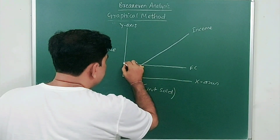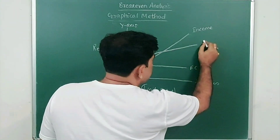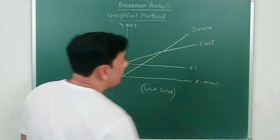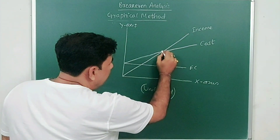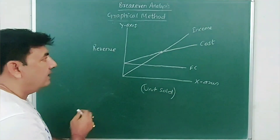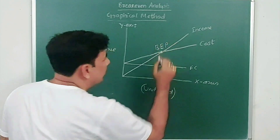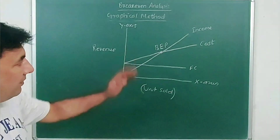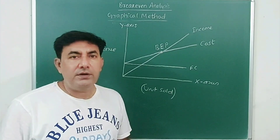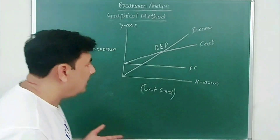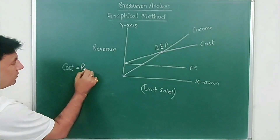Draw one more line — this is the cost line. The point where these two lines intersect is called the break-even point, or BEP. At this point the firm neither earns any profit nor incurs any loss, meaning cost is equal to revenue.